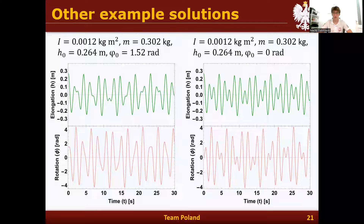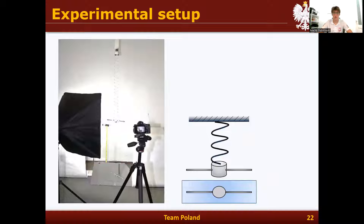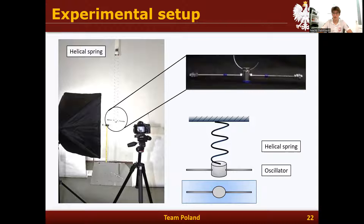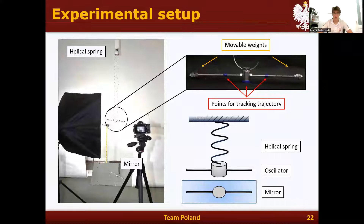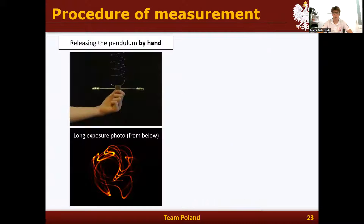The theory allowed us to plot some exemplary solutions. The Wilberforce pendulum can oscillate in many different ways depending on relevant parameters. But in order to compare the theory to experiments, we needed to build an experimental setup. Our setup consists of a helical spring and an oscillator attached to it, with movable weights that we could move towards the center to reduce the moment of inertia without changing the mass. There are also well-visible tracking points, and a mirror underneath, allowing us to record oscillations in both coordinates simultaneously with a camera.